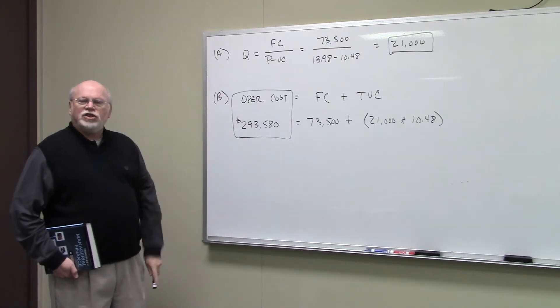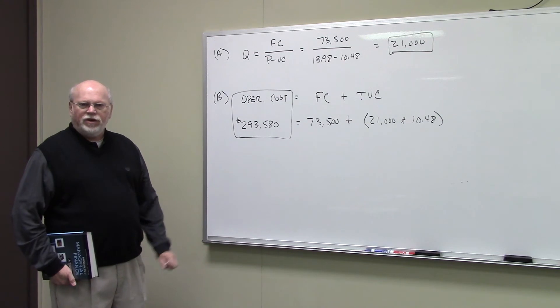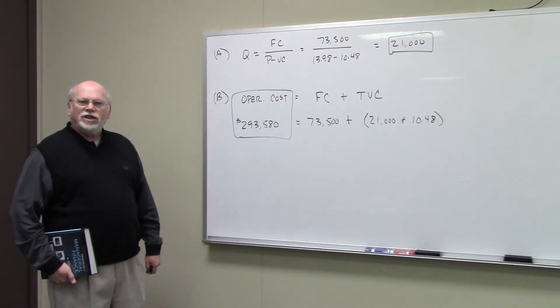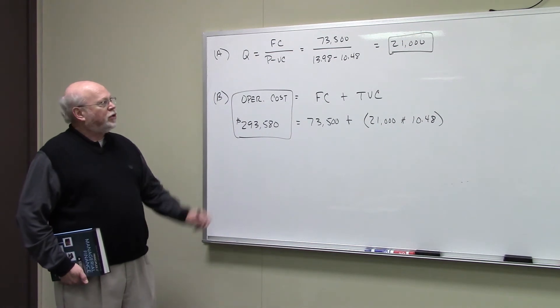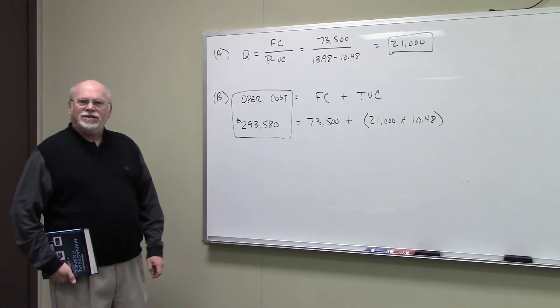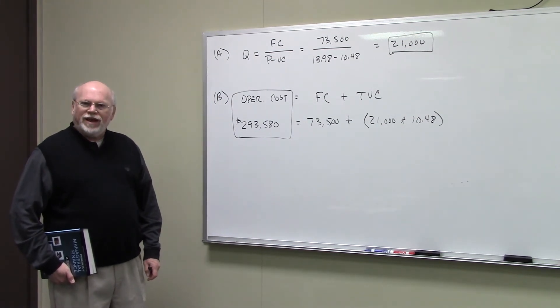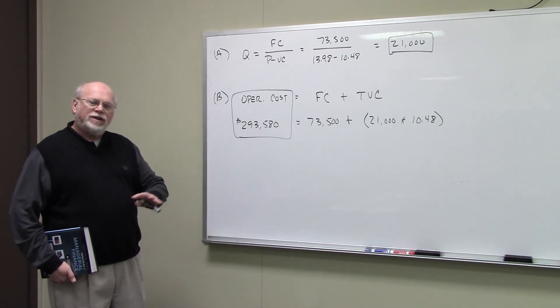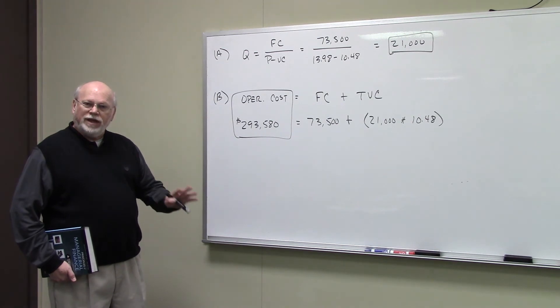If you take the fixed cost they told us about, $73,500, divide that by the price per unit, $13.98, minus the variable cost per unit, $10.48, we get 21,000 units. So if they sell 21,000 DVDs, they would have zero EBIT.